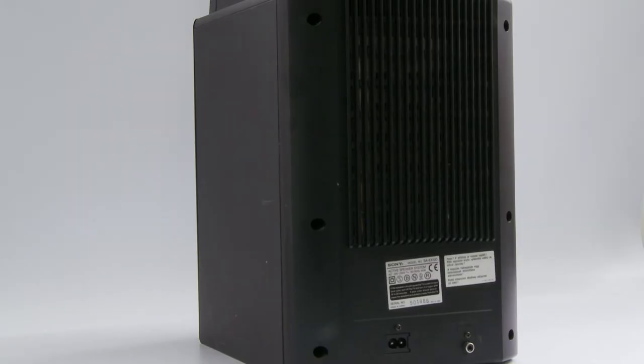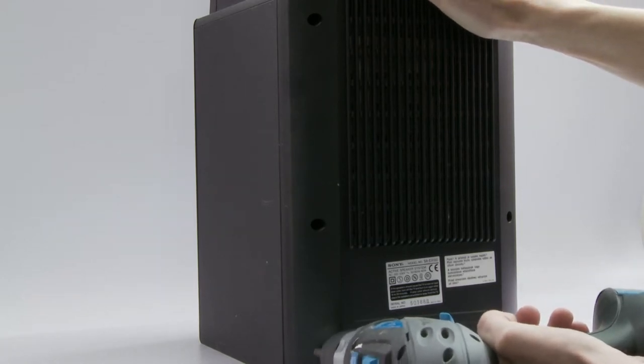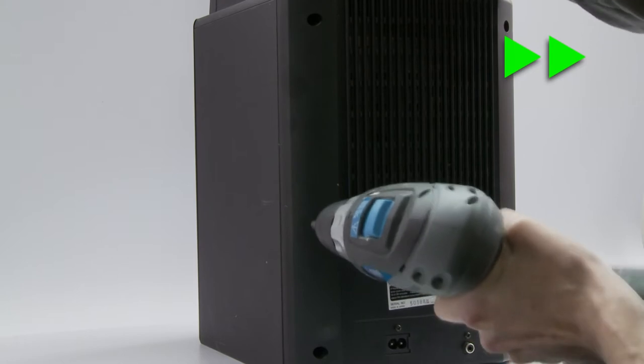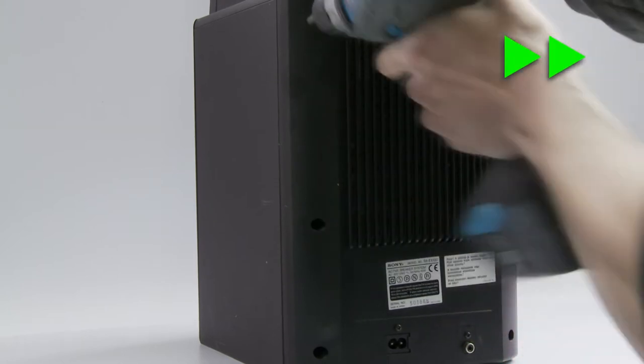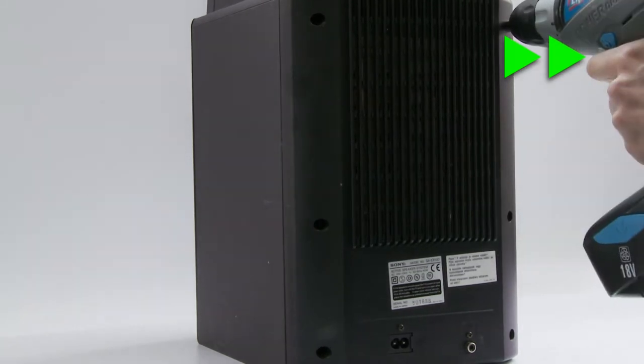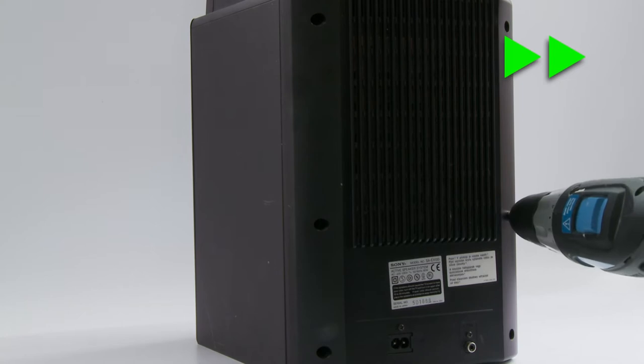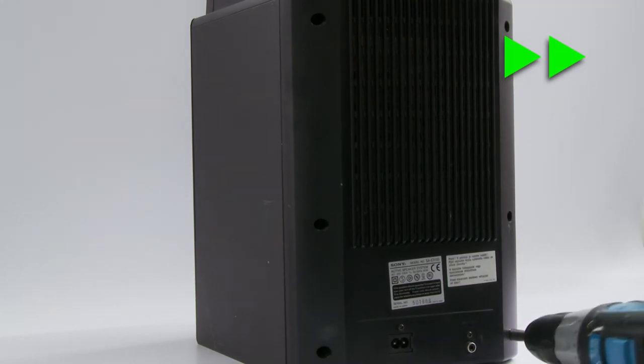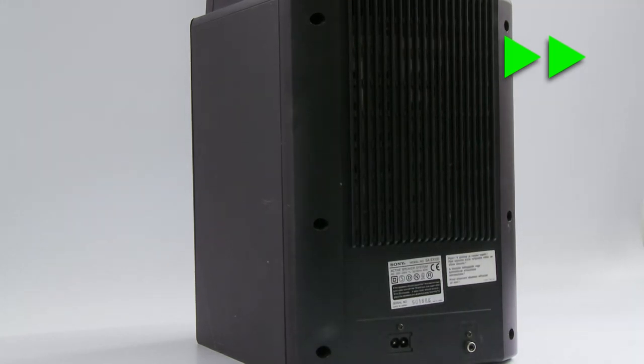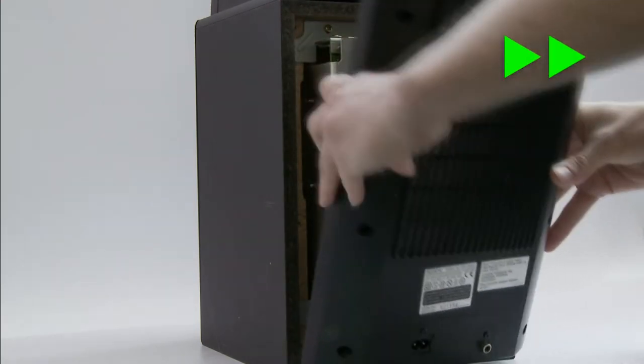Remove the back cover by unscrewing six screws, but be careful before removing the back. The back is connected with two connectors for power and line.